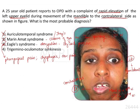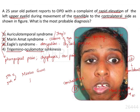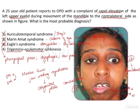The only remaining option is trigeminal oculomotor synkinesis. As the name indicates, there is trigeminal (CN V) and oculomotor (CN III) involvement with synkinesis between both nerves. This condition is also known as Marcus Gunn jaw winking syndrome. Patients with this syndrome have congenital ptosis, and whenever the patient makes any jaw movement, elevation of the upper eyelid — the winking effect — is observed. Therefore, trigeminal oculomotor synkinesis is the most probable diagnosis.